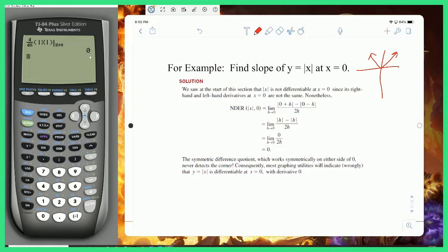The symmetric difference quotient work kind of looks like this. The limit as h goes to 0 of absolute value of 0 + h minus absolute value of 0 - h over 2h, which is the absolute value of h minus the absolute value of h, which is 0 on top, which gives you 0 as an answer. This is not true. Understand that the calculator is improperly calculating this because it's not differentiable there, and that confuses the calculator. The symmetric difference quotient doesn't pick up on the corner point.